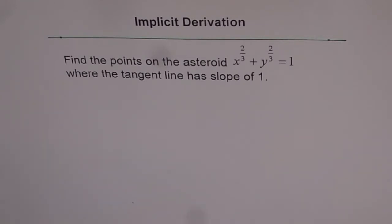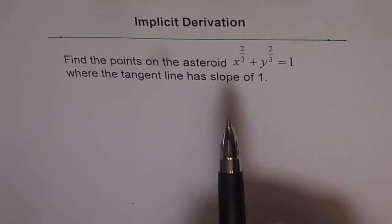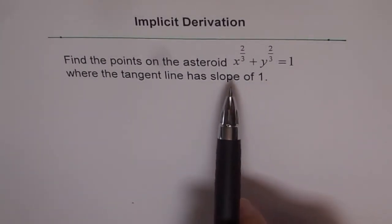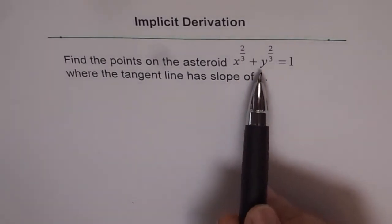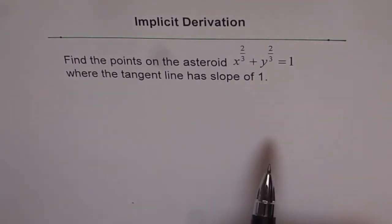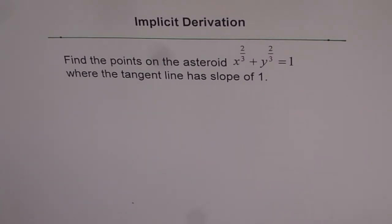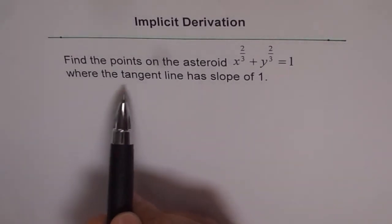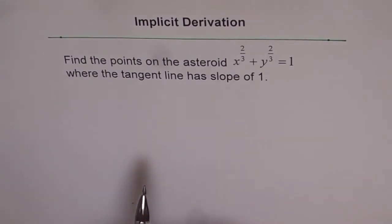Now in these problems when I solve, I'll be doing some shortcuts — I won't follow all the steps as I had been doing in the previous videos. When we do implicit derivation, we take the derivative of each and every term with respect to x, apply the chain rule to find the derivative of y, bring the terms together, and get dy/dx. That is the process we always follow, but I'm going to quickly go through the problem. The main part here is finding where the tangent line has a slope of one.